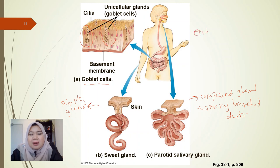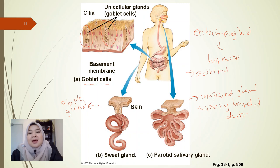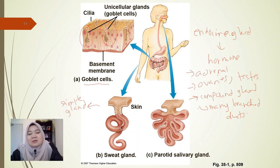Endocrine glands are glands that secrete hormones. You can name any endocrine gland in our body — for example, the adrenal gland that secretes adrenaline, ovaries that secrete estrogen, and the testes that secrete testosterone.